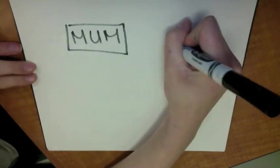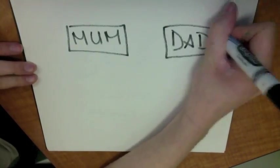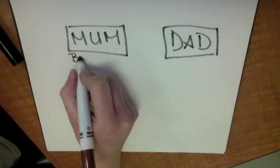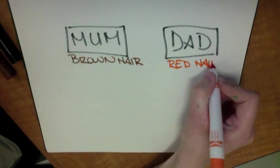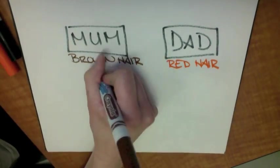Each trait, or gene, is represented by two alleles — one from your mom and one from your dad. But only one allele shows up.